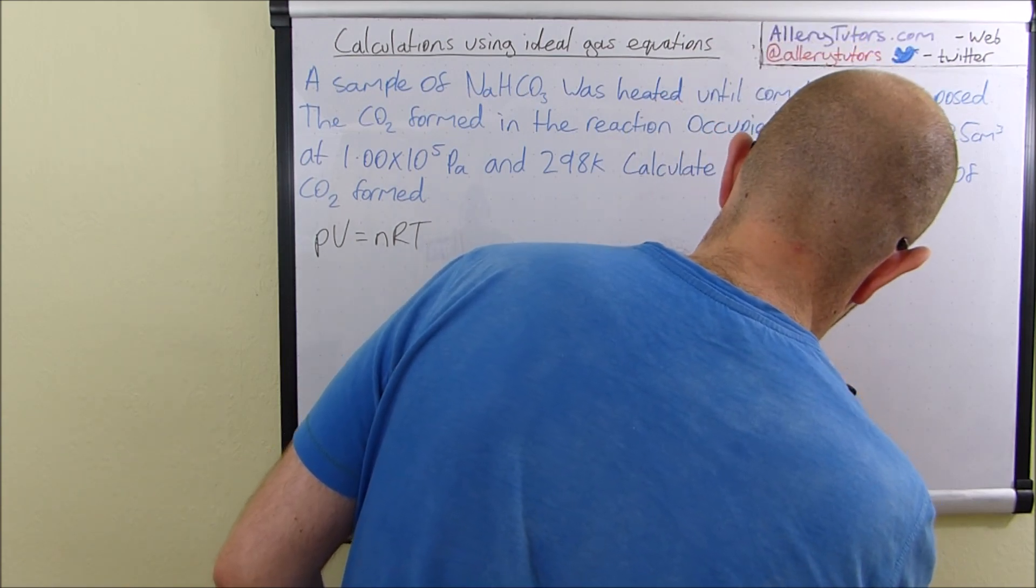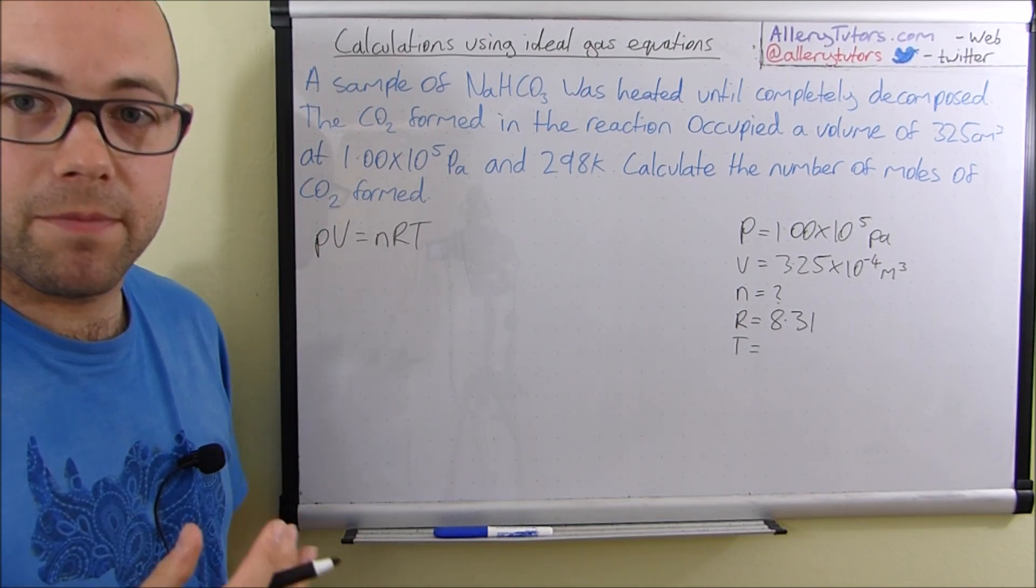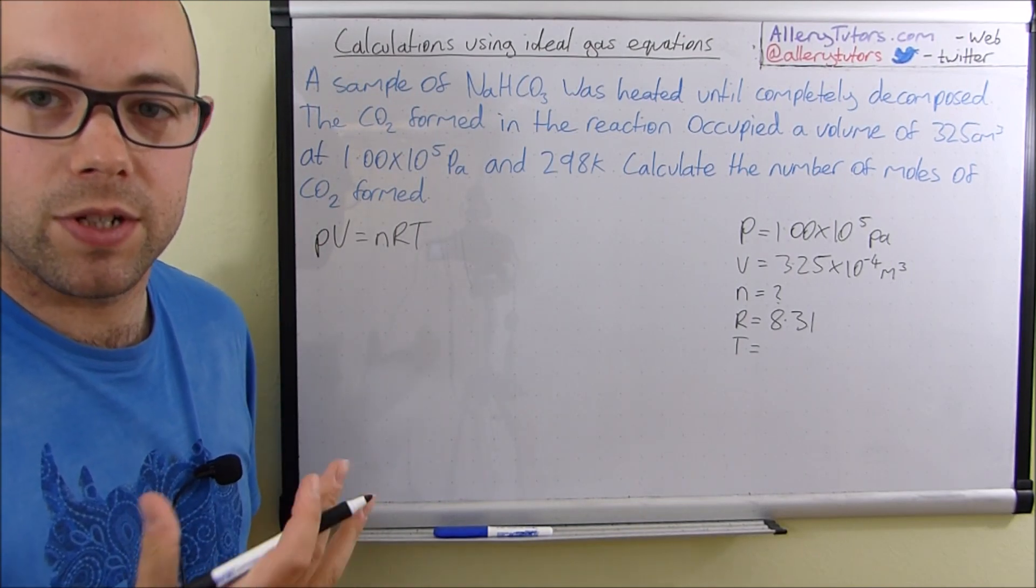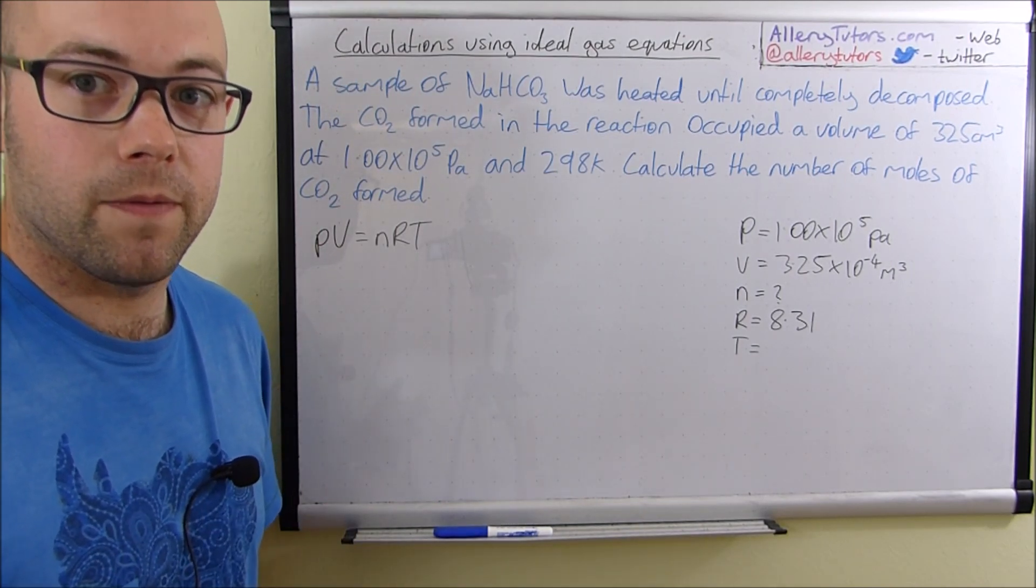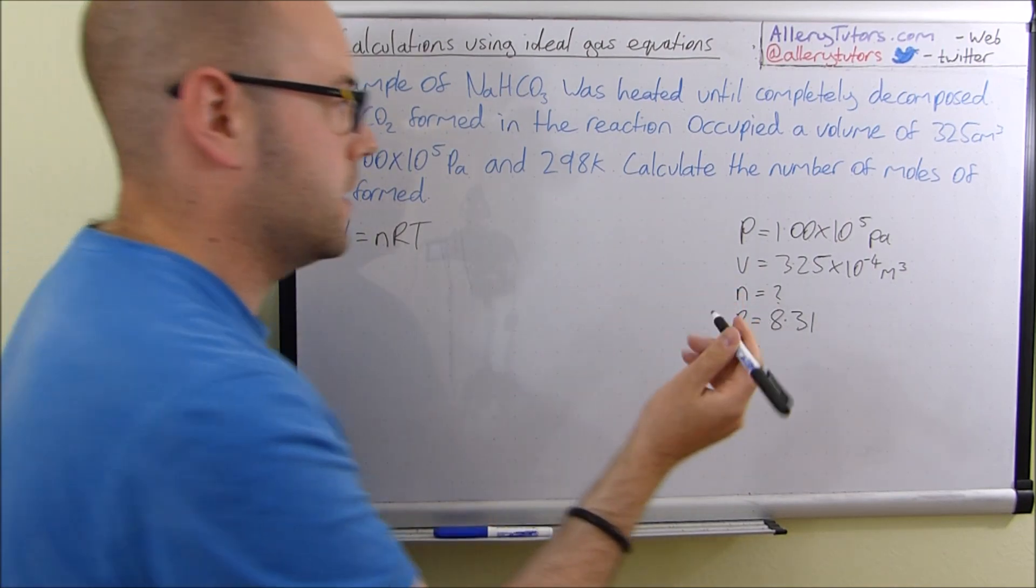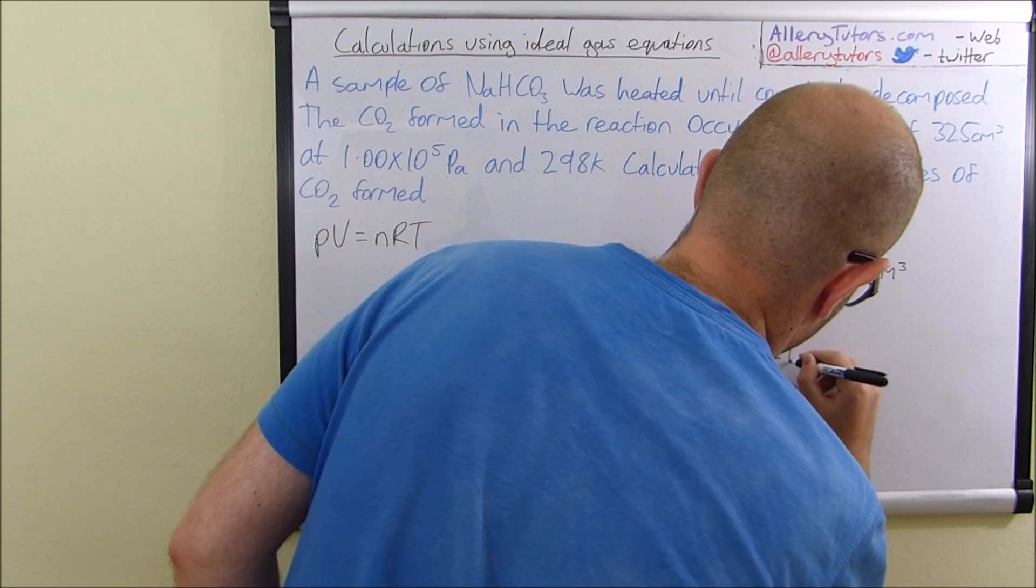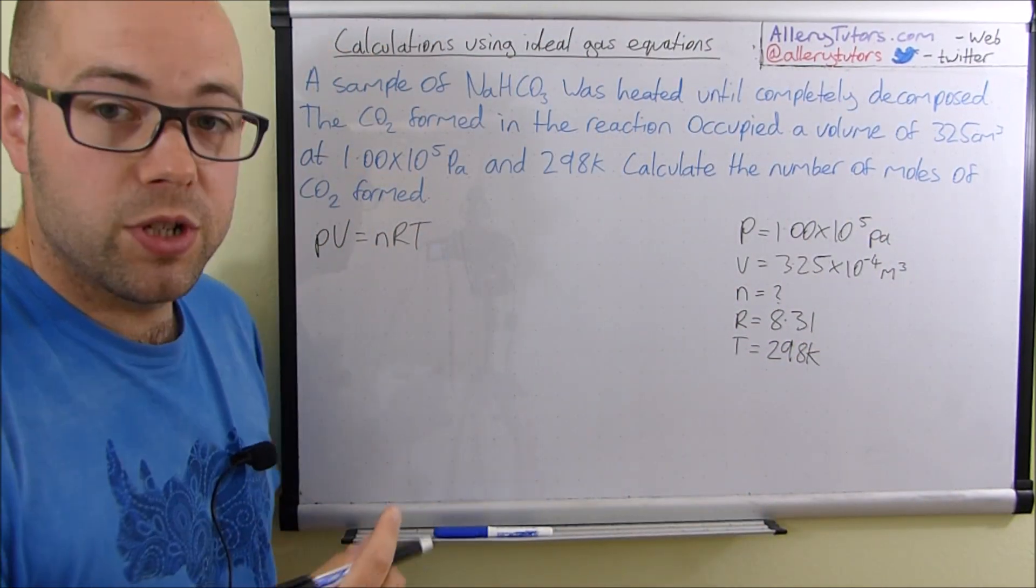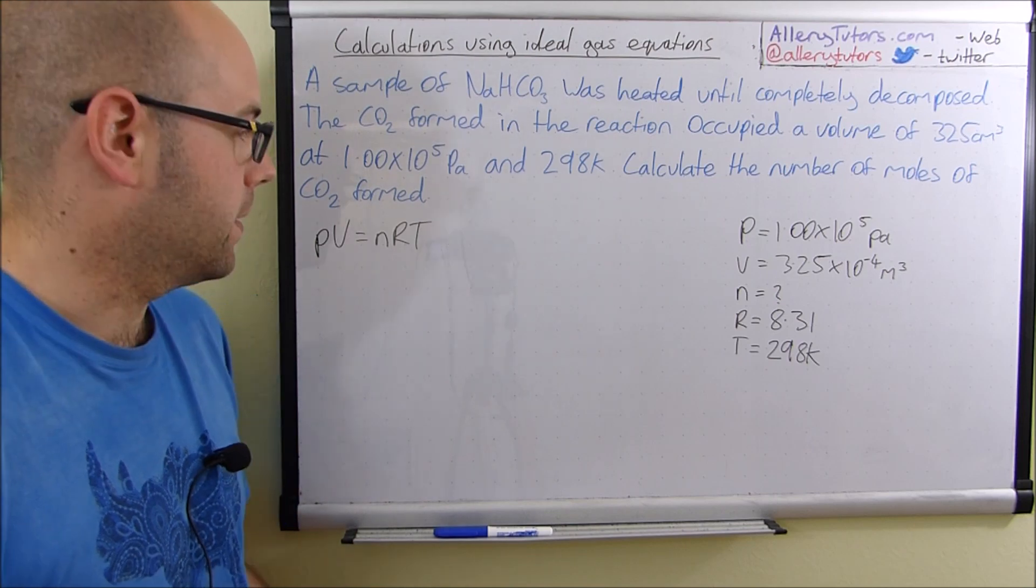And T is the temperature. Now, the temperature must be in Kelvin for this. If it's in degrees Celsius, you need to be able to convert it to Kelvin. In this case, because it's already in Kelvin, that's fine. We just put 298 Kelvin, and that's the number we must use in this example.